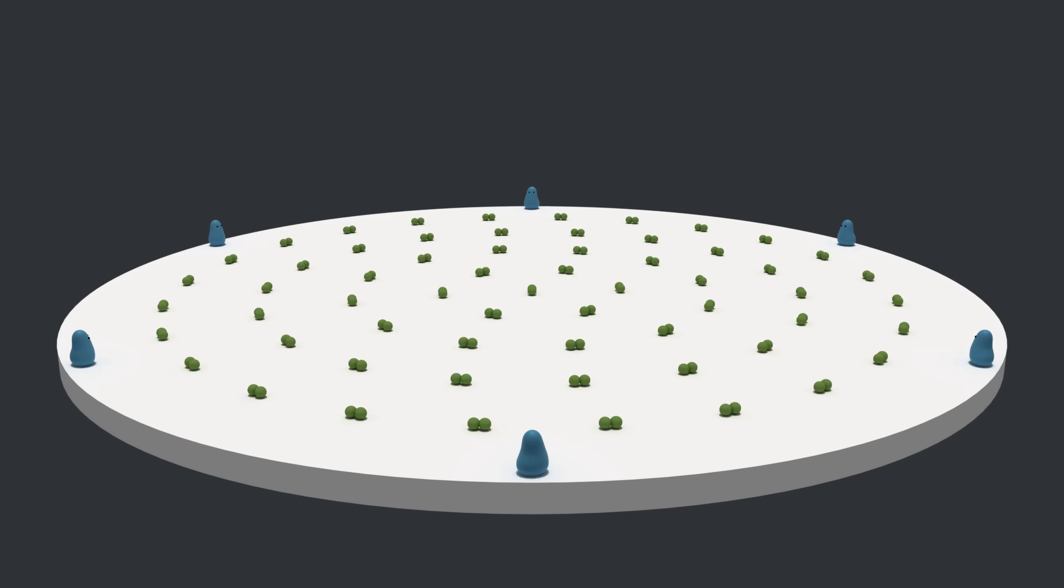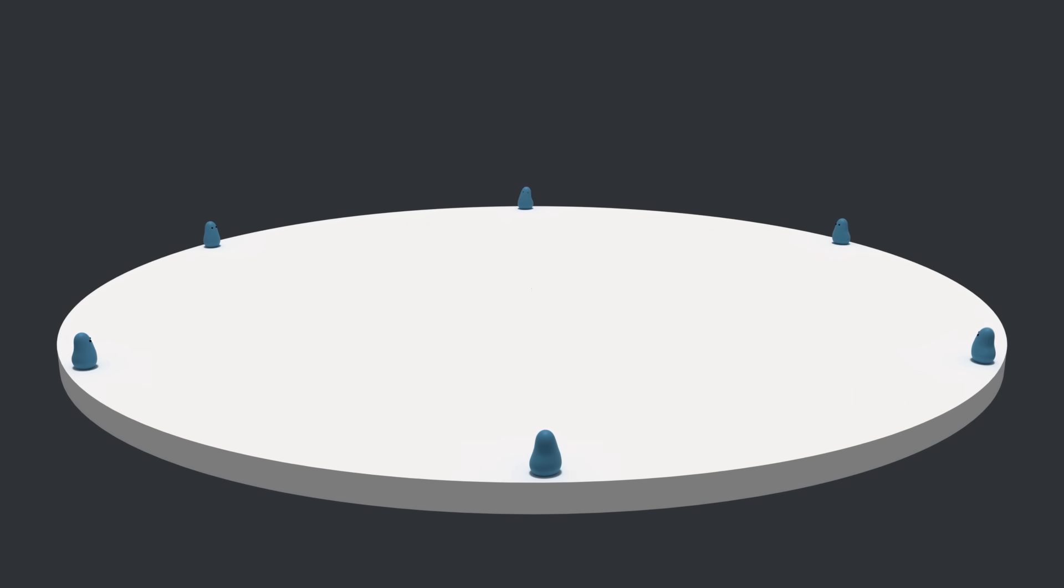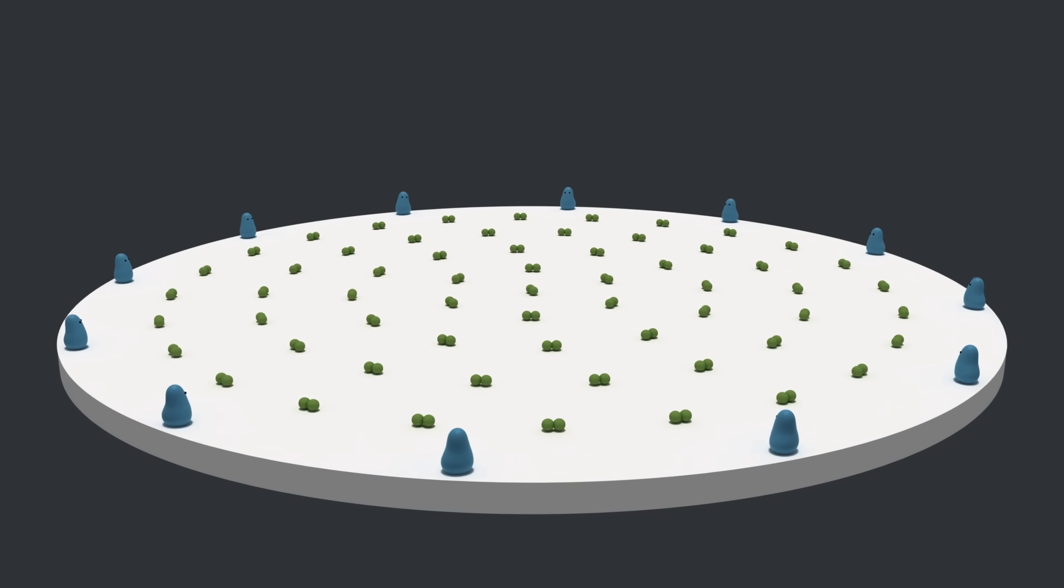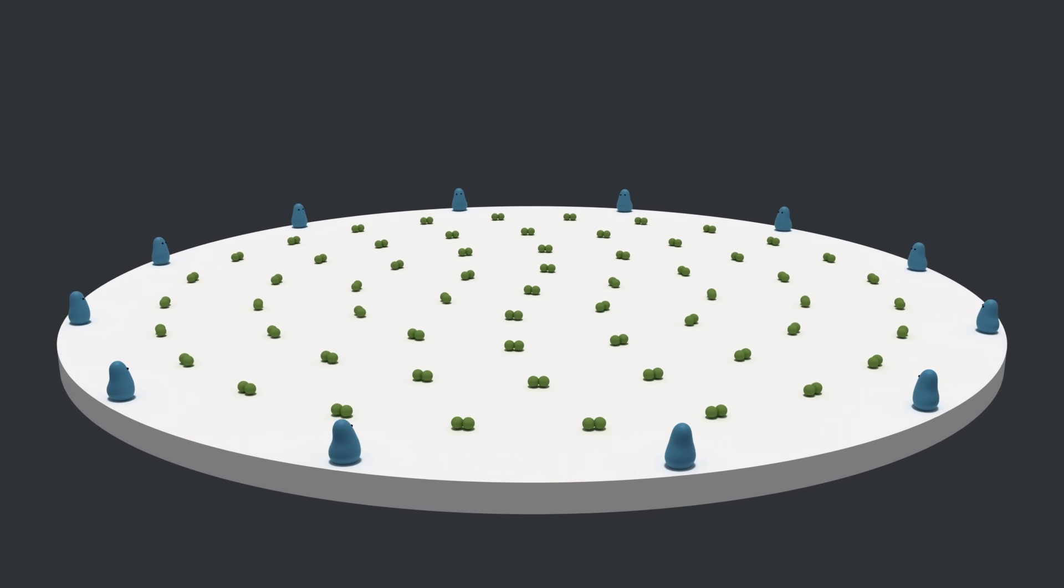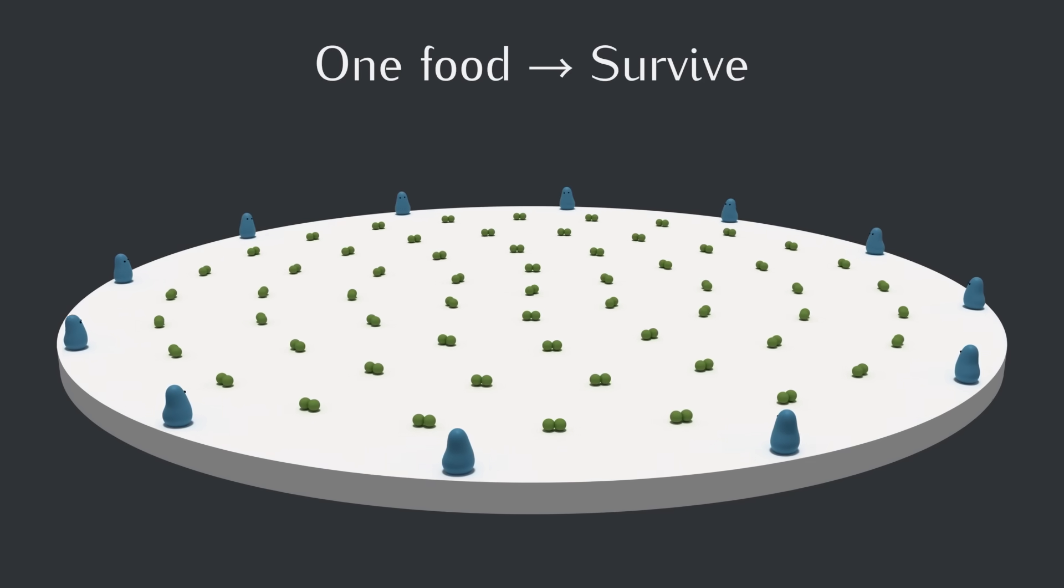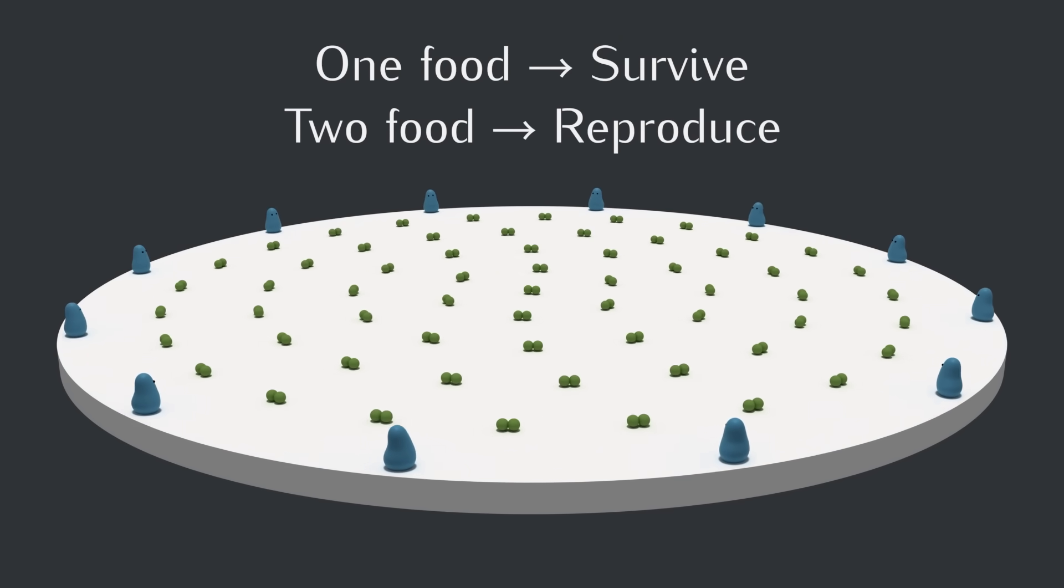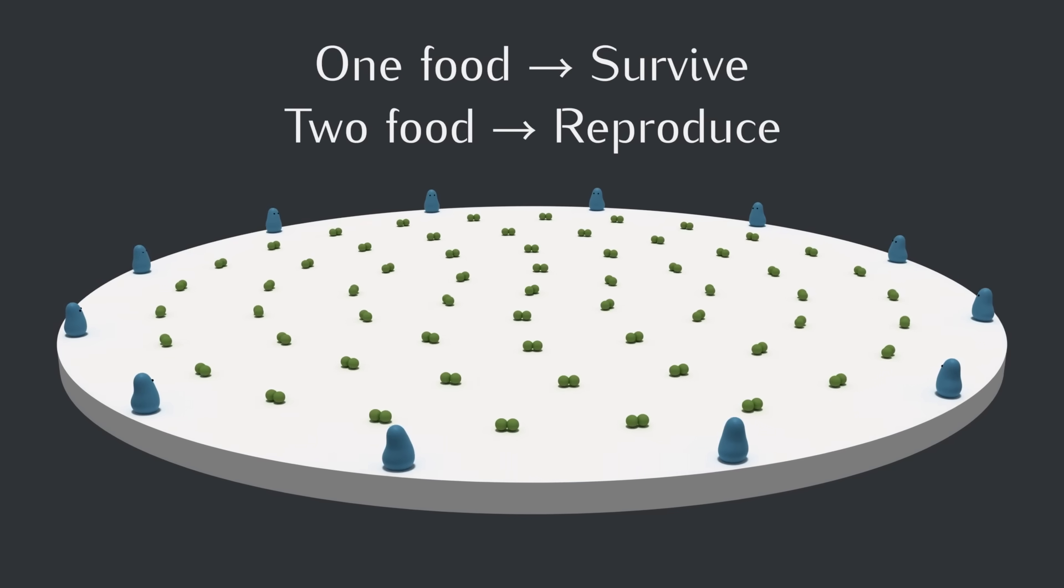Okay, so in our simulation, food will appear each day, and then blobs will appear and go out to eat the food. We'll use the same survival and reproduction rules as in previous videos. Eating one piece of food lets a creature survive to the next day, and eating two pieces of food allows a creature to both survive and reproduce.